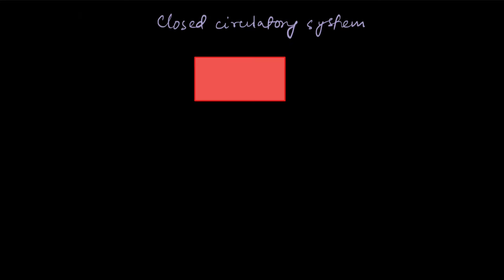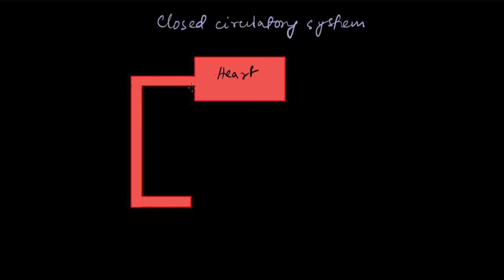First of all, we have the heart — a muscular organ which pumps blood, releasing it under pressure so that it can go to all parts of the body. The heart pumps blood into the blood vessels.